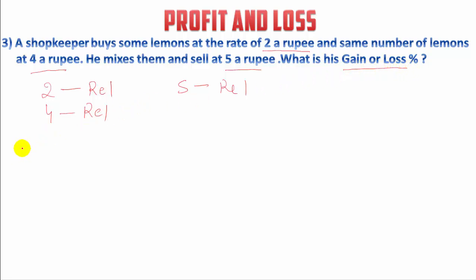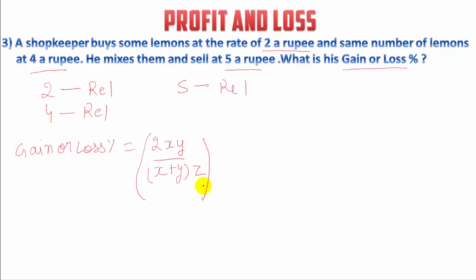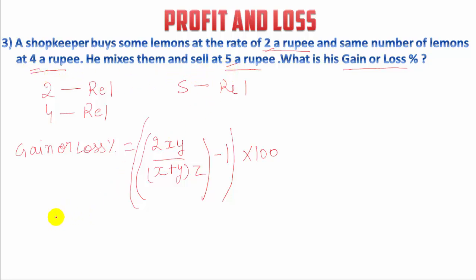There is a formula to find the gain or loss percentage. The best thing about this formula is you don't need to first determine whether there is a gain or loss. Just put the values and find the gain or loss percentage. If the answer is negative, then there is a loss; if positive, then there is a gain. Now according to the question, X is 2, Y is 4, and Z is 5.